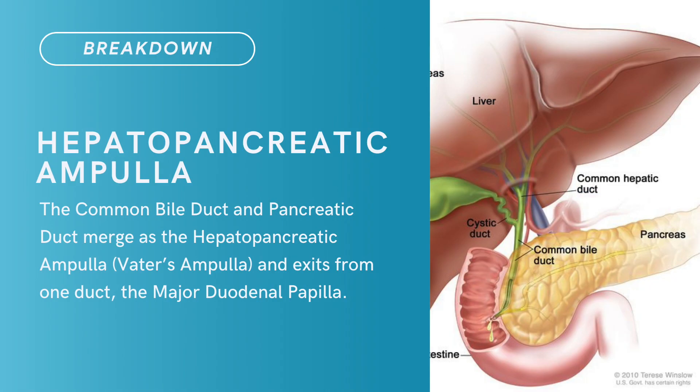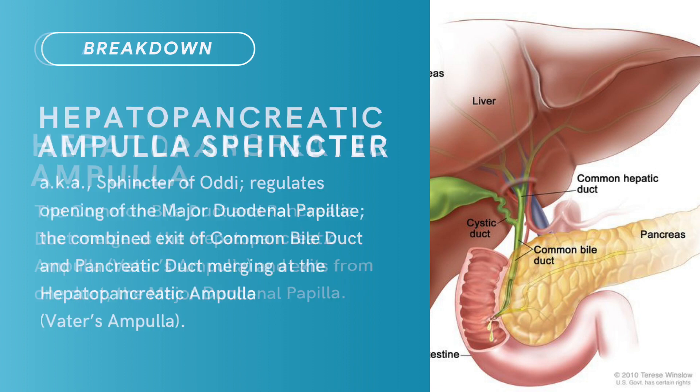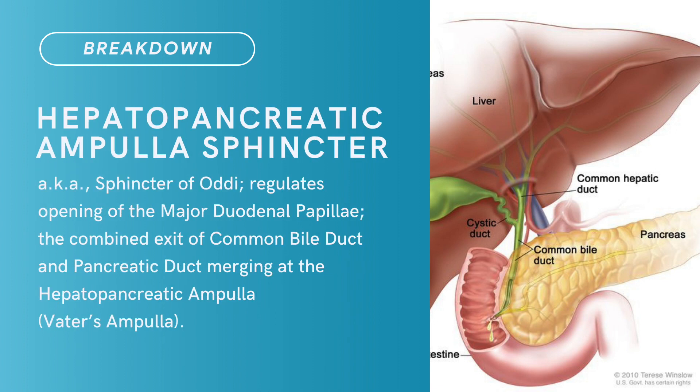Compound term: hepato-pancreatic ampulla. Brief definition: the common bile duct and the pancreatic duct merge as the hepato-pancreatic ampulla, also known as Vater's ampulla, and exit through the major duodenal papilla. Related term: hepato-pancreatic ampulla sphincter, also known as the sphincter of Oddi — it regulates opening of the major duodenal papillae, the combined exit of the common bile duct and pancreatic ducts merging at the hepato-pancreatic ampulla, that is, Vater's ampulla.